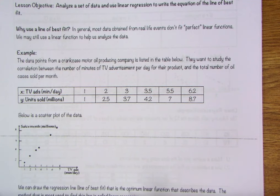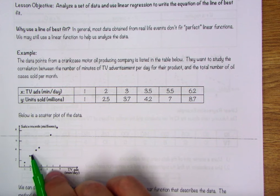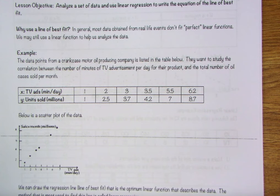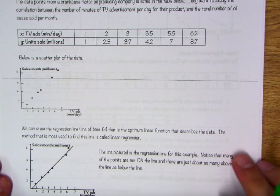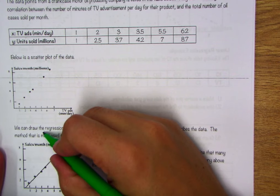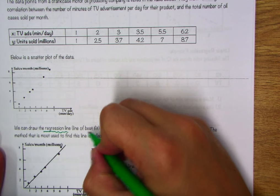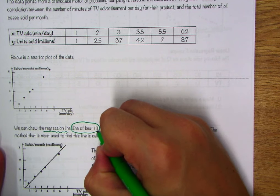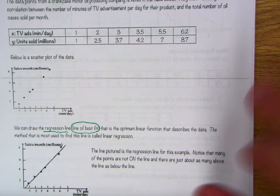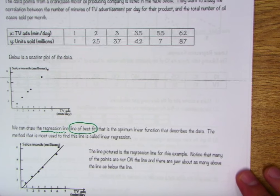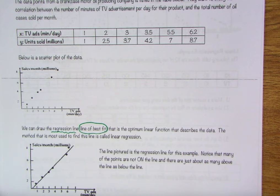So down below we see that there is actually a scatter plot of this data, 1,1, 2,2.5, so on and so forth. And they just set up their x and y axes. What we're going to be doing is actually coming up with what we refer to as the regression line, otherwise known as the line of best fit. So this is really just going to be the optimum linear function that describes the data.